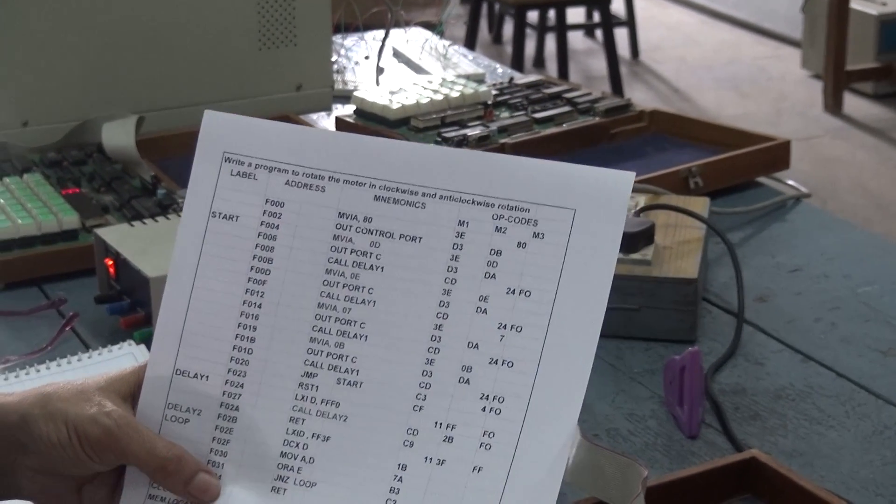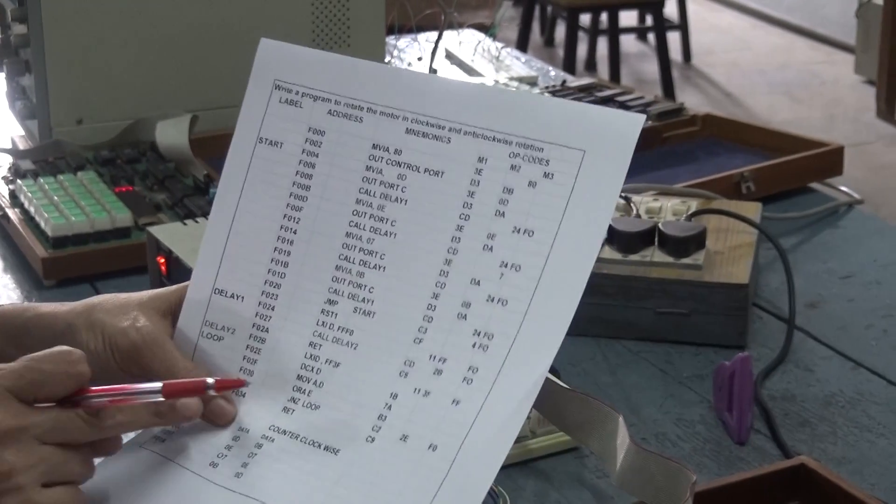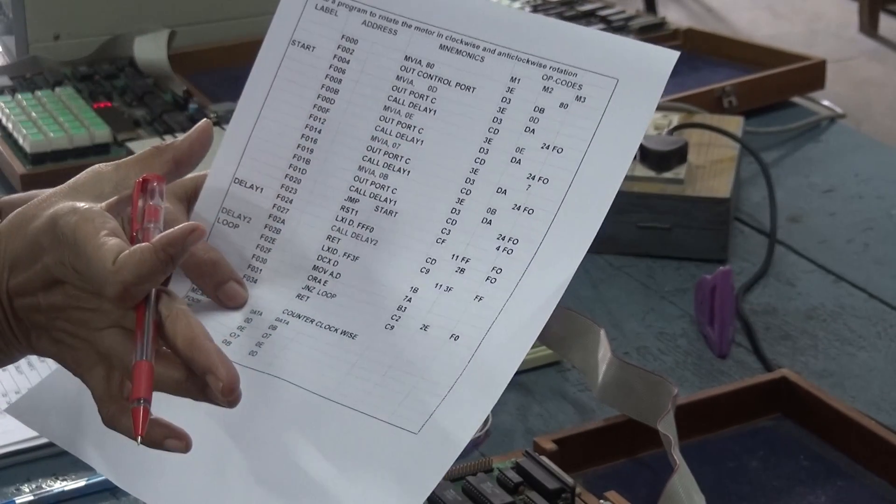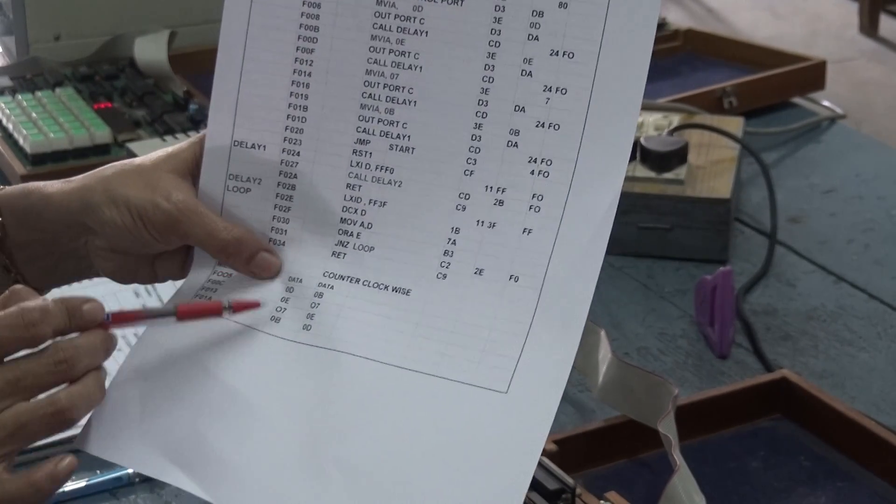So, what actually happens? It is actually, there is a commutator at a time, two at a time only will be coming into picture. So, either these two or these two. That is how the configuration is given for the data here.